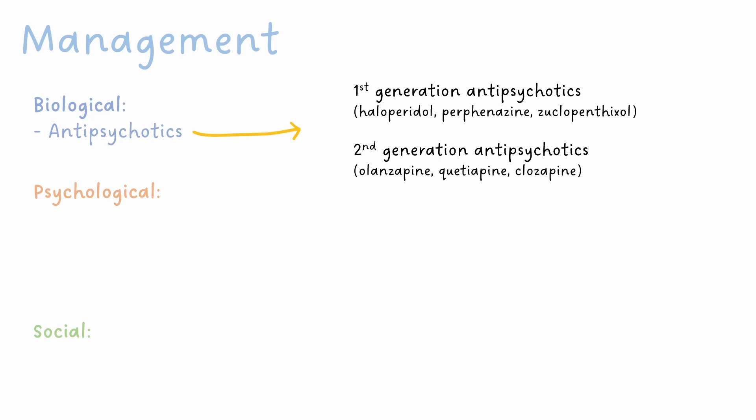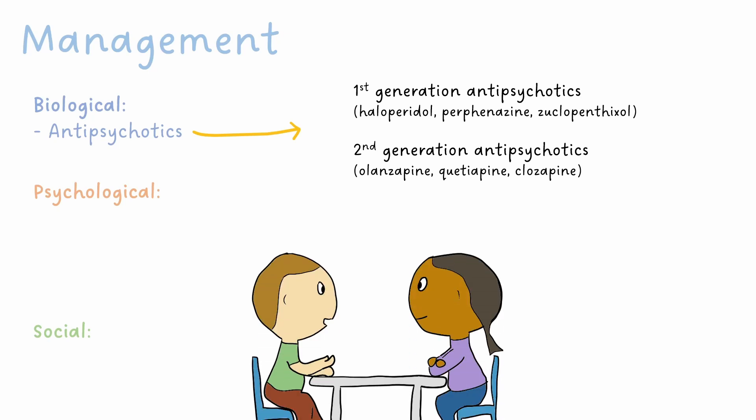Psychological management involves the use of talking therapies such as cognitive behavioral therapy, or CBT, where the aim is to alter the way in which people think and behave in situations that are usually problematic for them. Family intervention and psychoeducation are also both proven at being useful in the holistic management of schizophrenia.